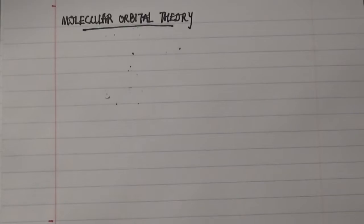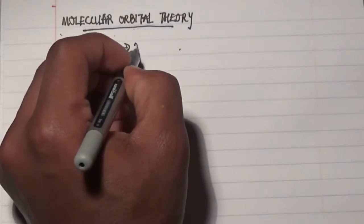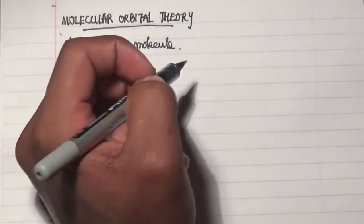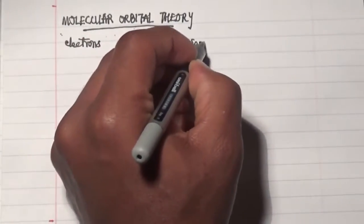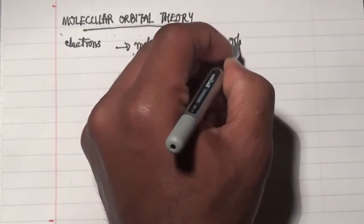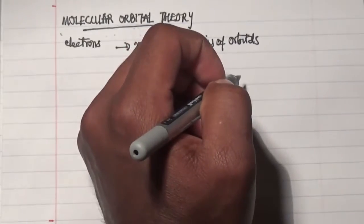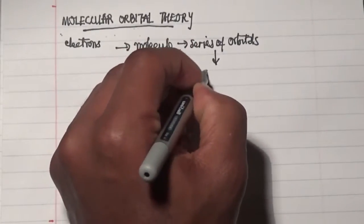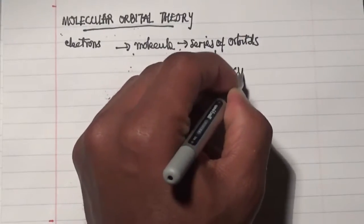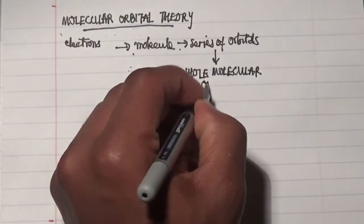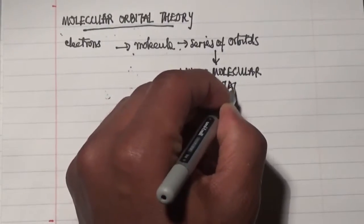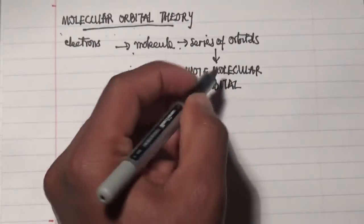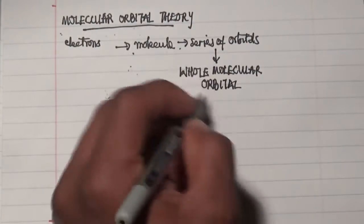This theory assigns electrons into a molecule, and these electrons that are in a molecule are to some extent arranged in a series of orbitals, which results in them belonging to the whole molecular orbital. This series of orbitals are all related to the specific atoms that are involved in the formation of the molecular orbital.